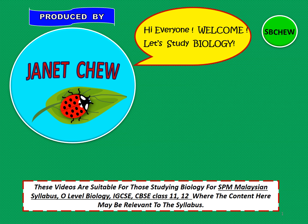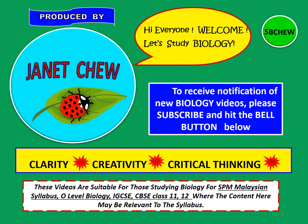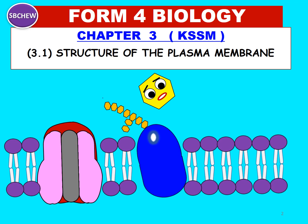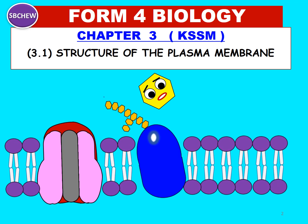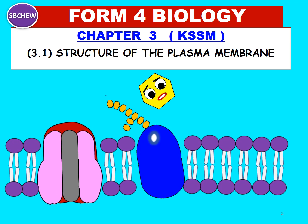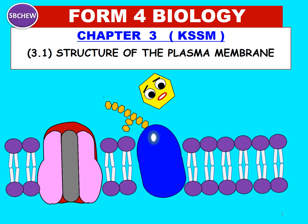Welcome back to our biology videos for Form 4 and Form 5. This video is a continuation of the previous one on the structure of the plasma membrane. We have already discussed the fluid mosaic model and the structure and characteristics of the phospholipid bilayer. In this video, we will be studying the other three components of the plasma membrane: the protein molecules, glycolipids and glycoproteins, and cholesterol.